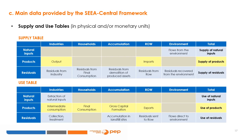Compared to conventional supply and use tables, the SEEA supply and use tables incorporate an additional column for the environment and two additional rows for natural inputs and residuals. Natural inputs are all physical inputs moved from their location in the environment as part of economic production processes — they can be natural resource inputs like minerals or water, inputs of energy, or other natural inputs such as nutrients or oxygen. Residuals are flows of solids, liquids, gaseous materials and energy that are discarded or emitted by economic agents through processes of production, consumption or accumulation. Overall, the total supply of each category of product must equal the total use of that product.